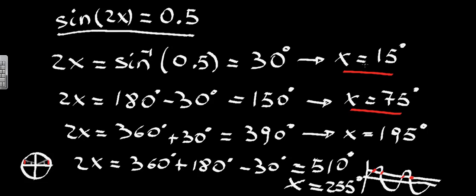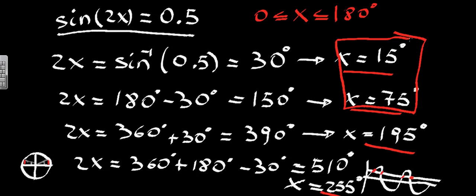These four values, 15, 75, 195 and 255 are our four solutions to the trigonometric equation. If the equation gives us a range of values acceptable for x, let's say our question said x has to be between 0 and 180, for example, we would neglect the last two solutions, and our solutions would be 15 and 75, as 195 and 255 are both over 180. And this is the solution to the problem.